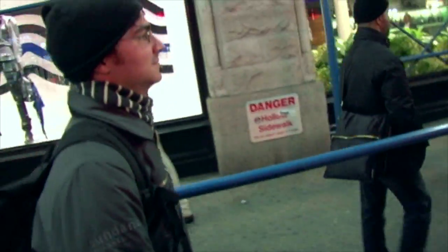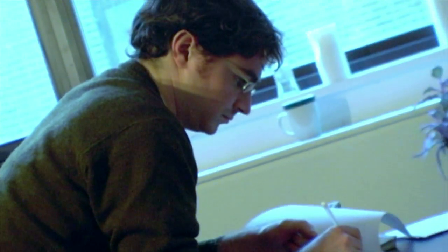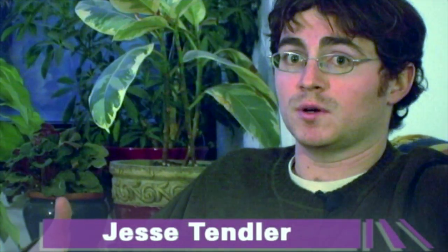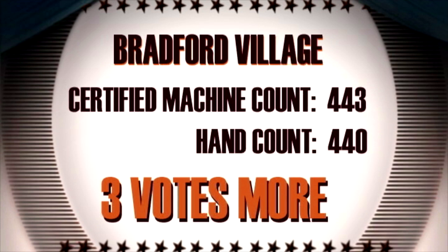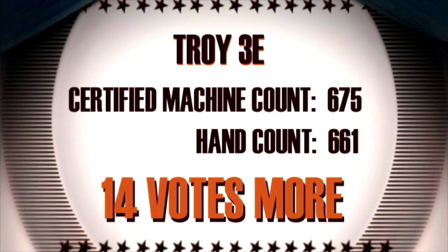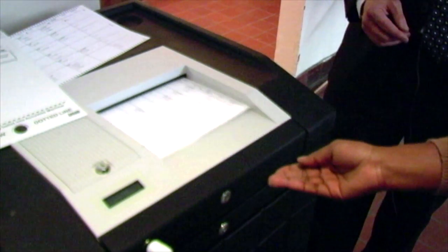Are the elections being rigged? Yes, our evidence shows that they are — evidence like the 2004 presidential recount results in Ohio. Jesse Tendler was a regional coordinator for that recount, in charge of about ten different counties. Not only was there a discrepancy between the hand recount and the original certified vote, in most cases there was also a discrepancy between the hand recount and the machine recount in every precinct in every county. In Bradford Village, the official certified machine count had three votes more than the hand count; in Piqua 2A, eight votes more; Troy 3E, fourteen votes more. The machine seems to be adding a small number of votes each time. The difference of six votes per precinct could change the results of the entire election.